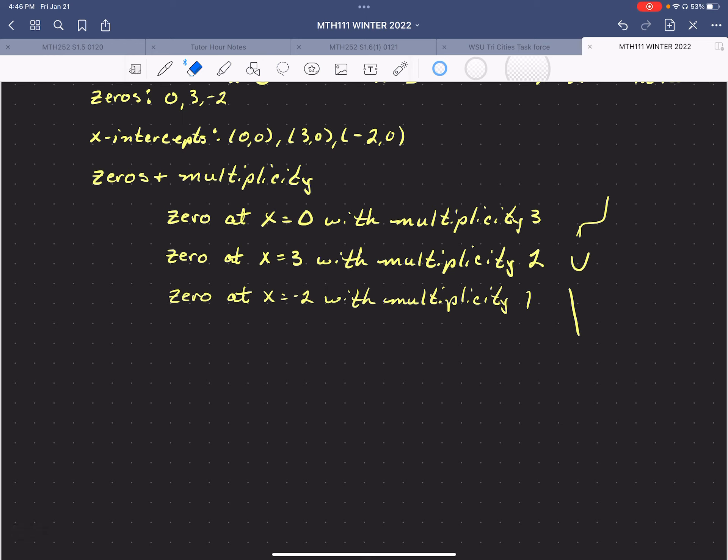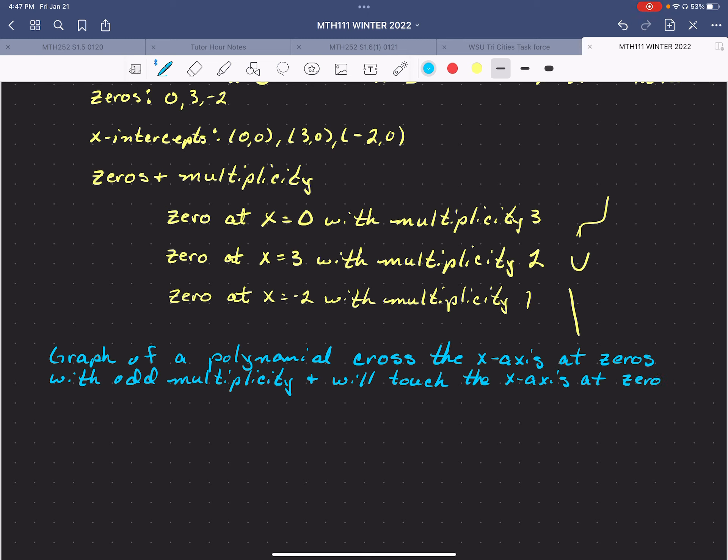If, so, the graph of a polynomial will cross the x-axis at 0s with odd multiplicity and will touch but not cross, so they touch and turn around kind of bounce off, at 0s with even multiplicity.